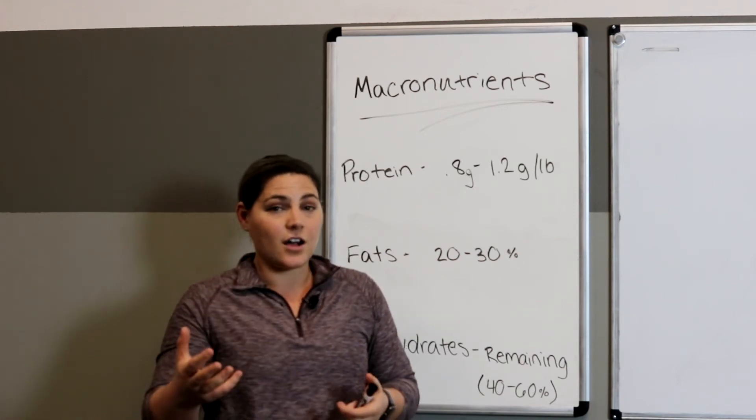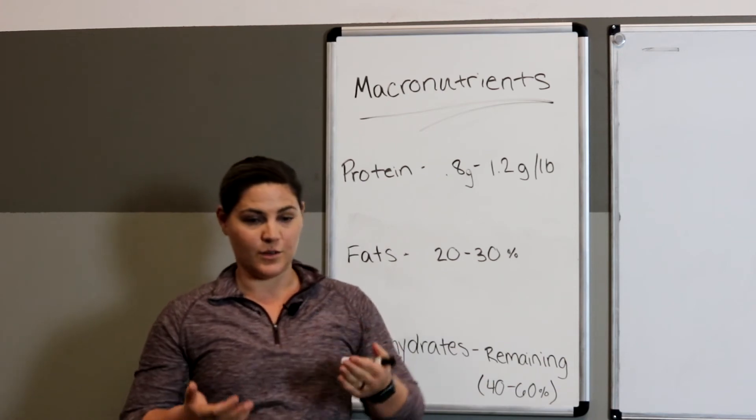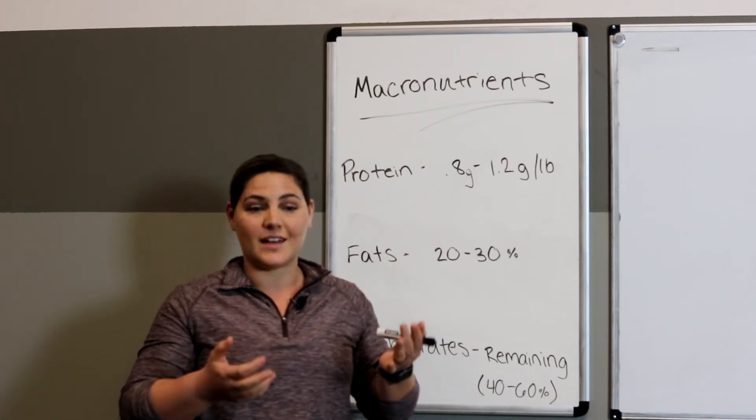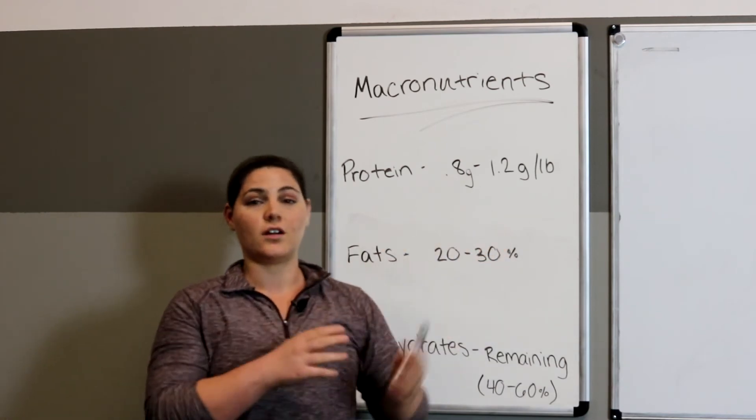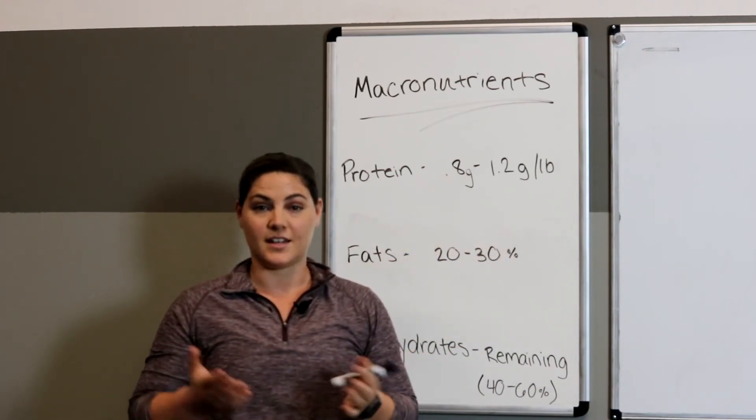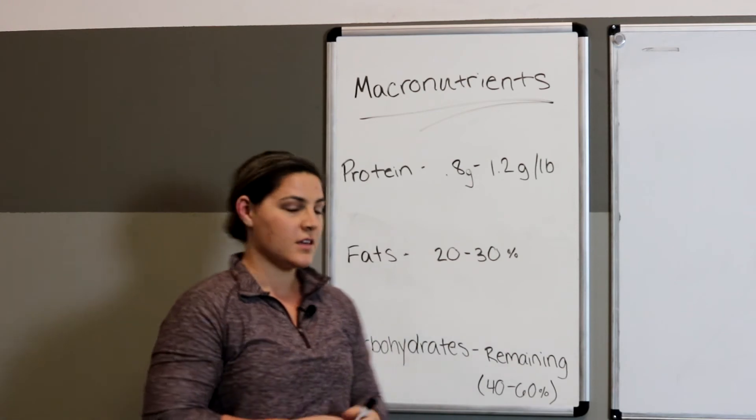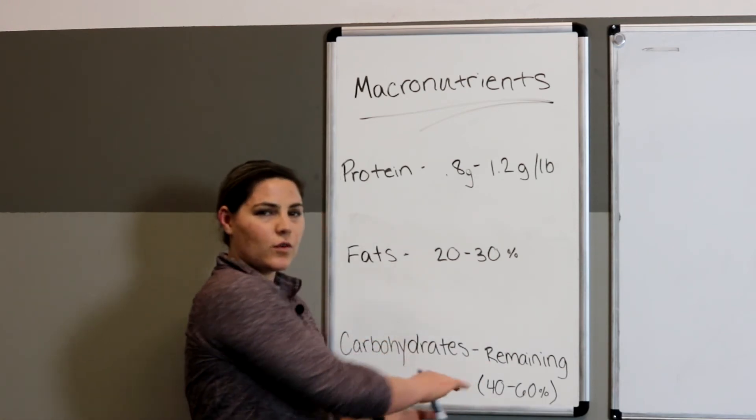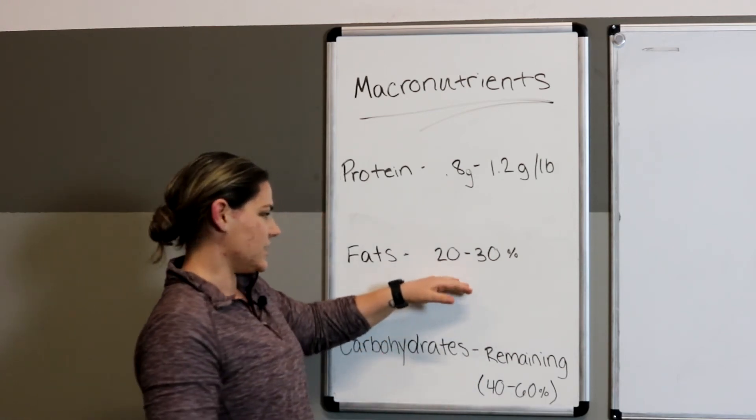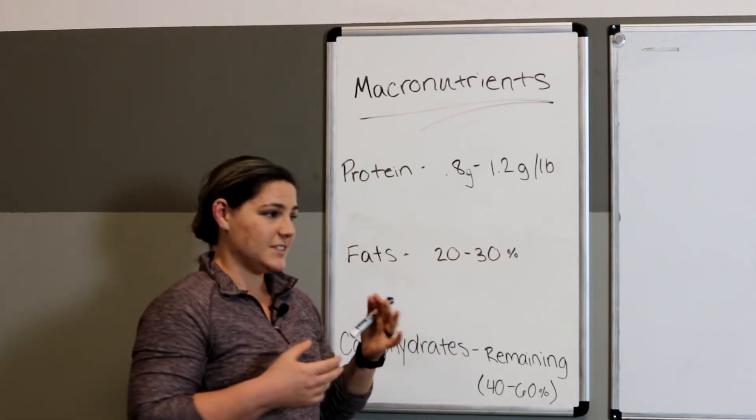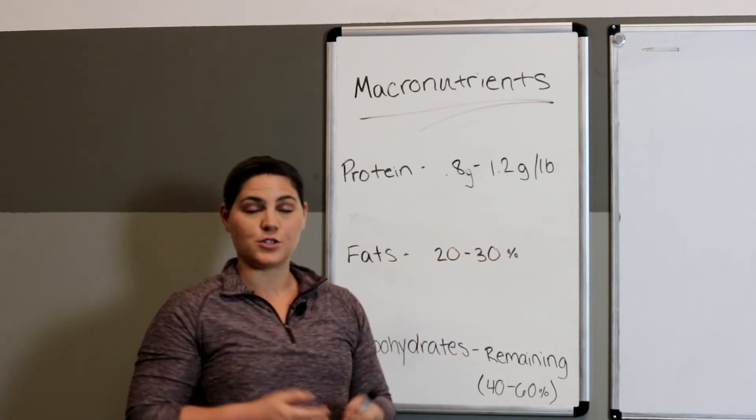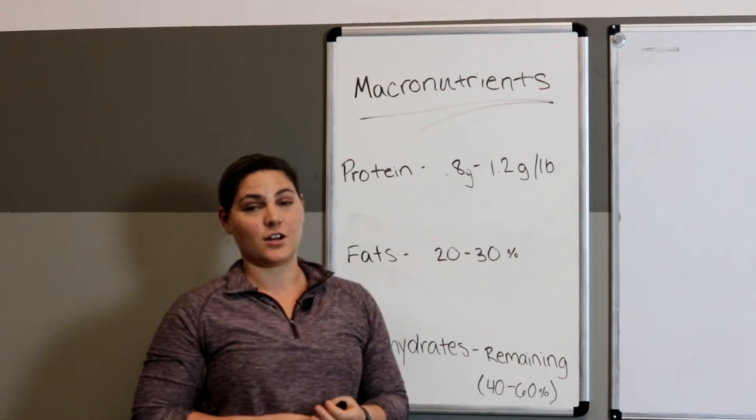If you feel better on a high carb diet and lower fat, that's great. If you feel a little bit better on higher fat, lower carbs, that's great. As long as protein is within here and your overall calories are dialed into maintenance. Again, part one, go check that out. So this ends up being around 40 to 60%, as long as this is within 20 to 30%. So again, see how you feel. You can kind of play with each, but make sure your total calories are in place.